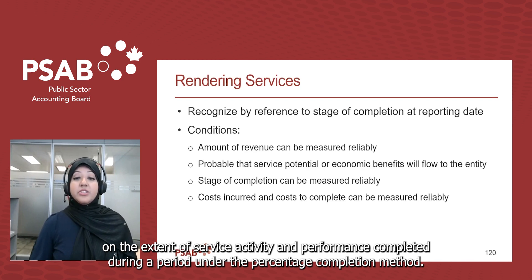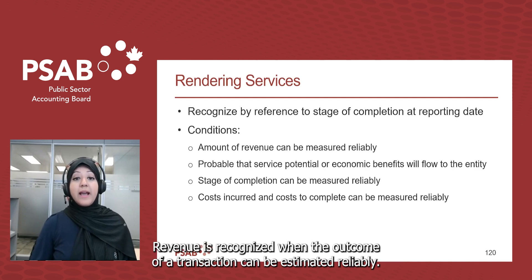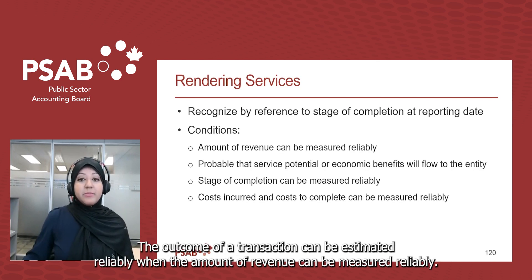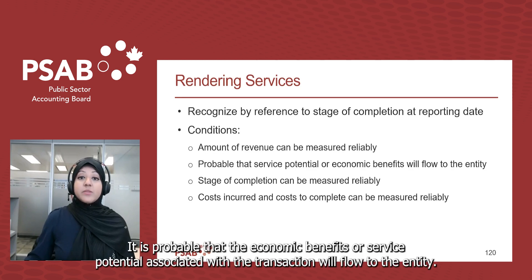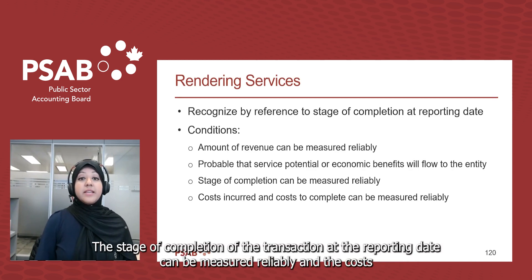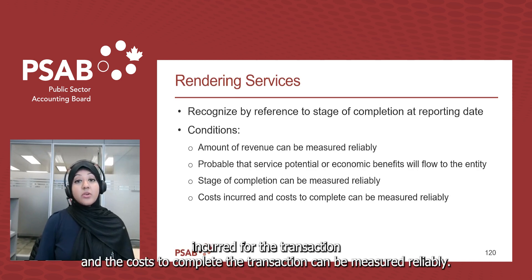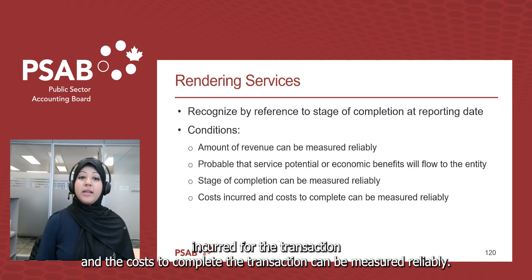Under the percentage completion method, revenue is recognized when the outcome of a transaction can be estimated reliably. This requires that: the amount of revenue can be measured reliably; it is probable that the economic benefits or service potential associated with the transaction will flow to the entity; the stage of completion at the reporting date can be measured reliably; and the costs incurred and the costs to complete the transaction can be measured reliably.